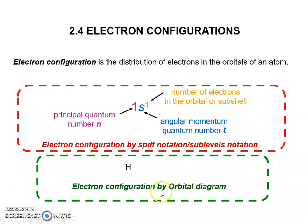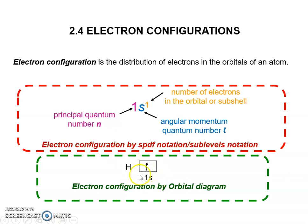In the orbital diagram, we will show the symbol of the element, the orbital, and the number of electrons by drawing arrows.